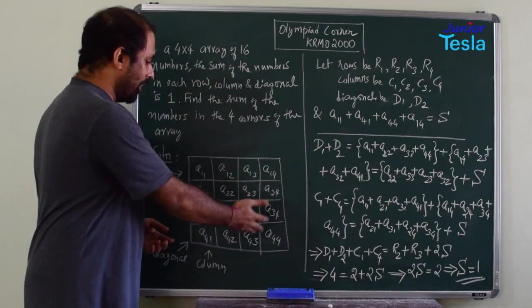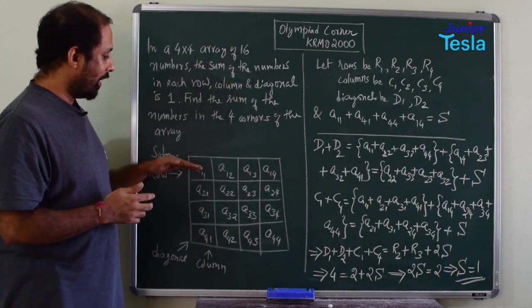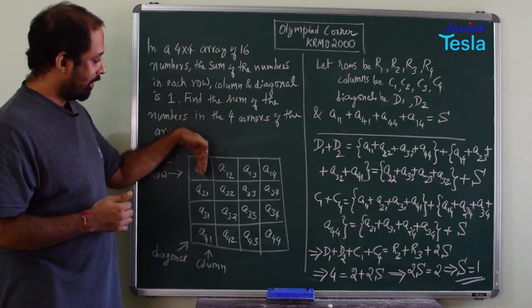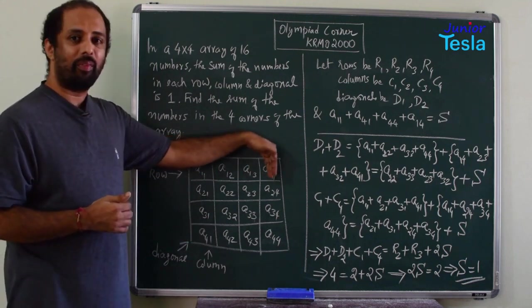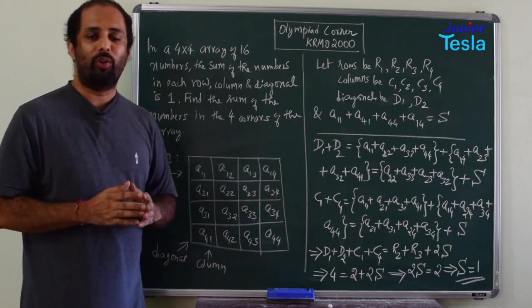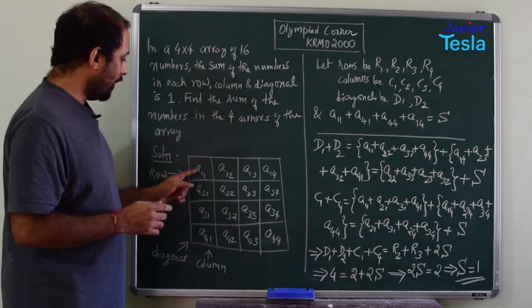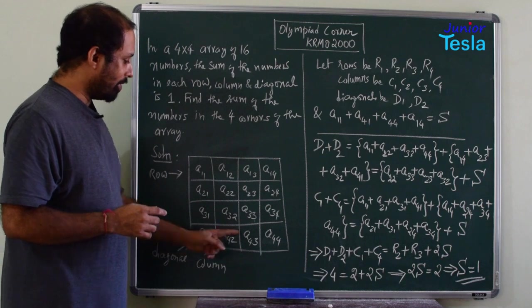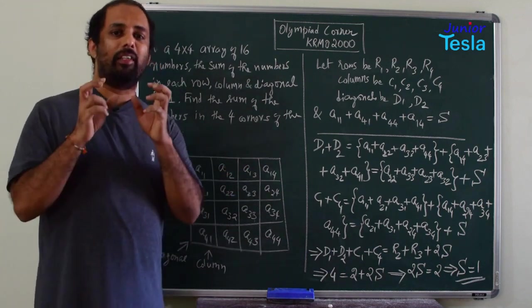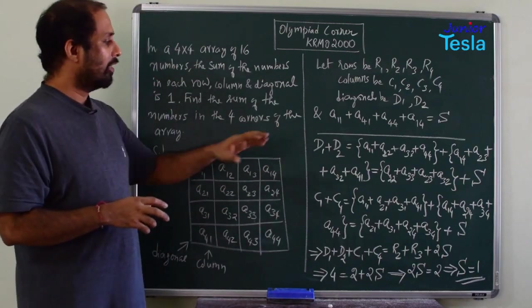Like that I have written all the 16 entries and let me call these rows as r1, r2, r3 and r4 and columns as c1, c2, c3 and c4 and let me call the diagonals as d1 and d2. And let me call the sum of these four entries - a11 plus a41 plus a44 plus a14 - the sum of these four entries let me call it as capital S. With this notation let me start the solution.